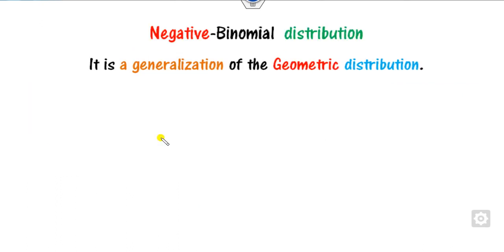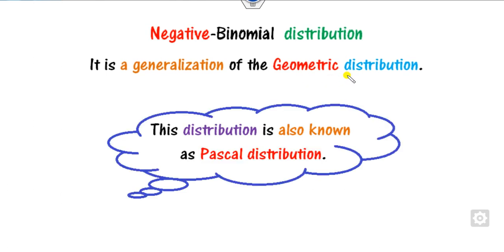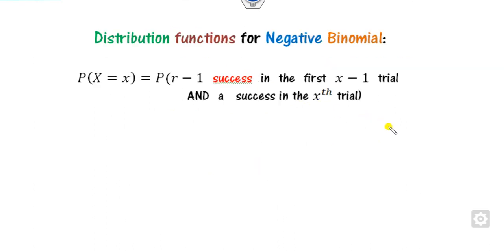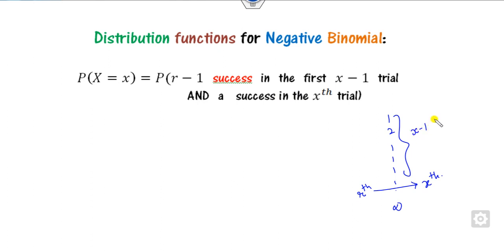What is the Negative Binomial Distribution? This is the generalization of the geometric distribution and it is also called the Pascal Distribution. We define it as: if you conduct an experiment up to an infinite number of times and at the x-th position you have to get the r-th success — out of these x trials, there are x minus 1 trials.